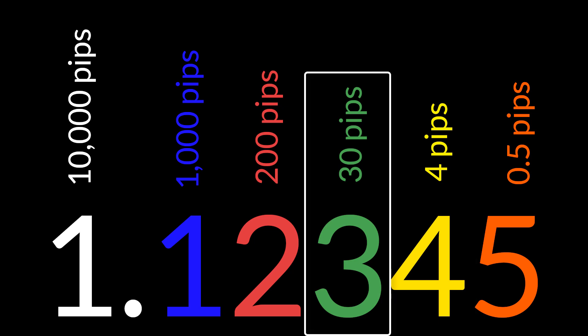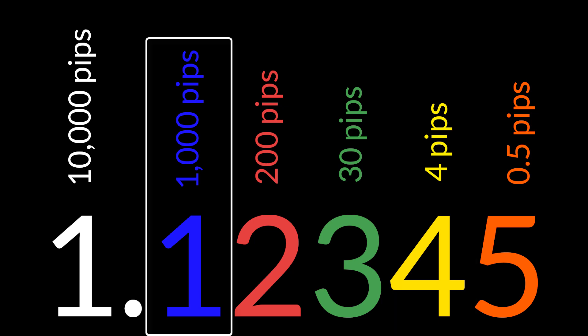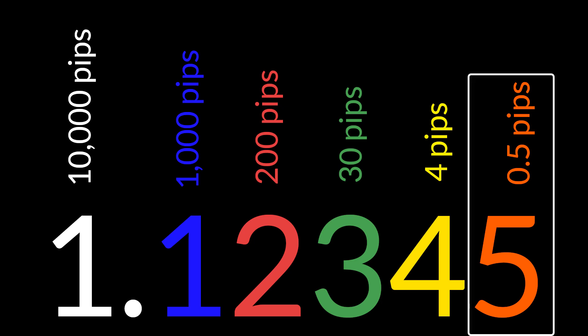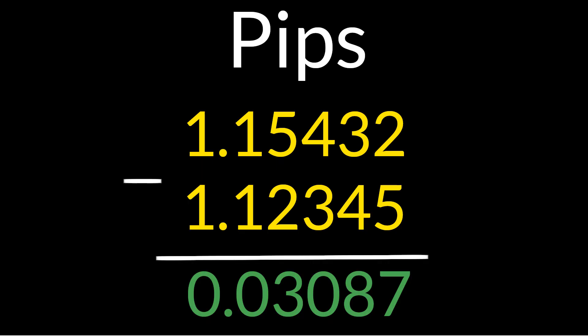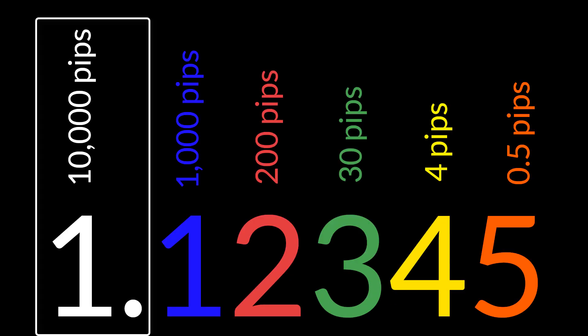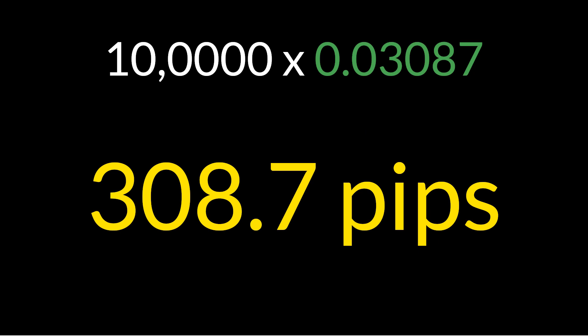For example, here we have 4 pips, 30 pips, 200 pips, 1000 pips. Sometimes you'll see a number after the pip — that's called a pipette, which is a tenth of a pip. If you want to know how many pips between two prices it's really just basic arithmetic: subtract one from the other. The digit to the left of the decimal represents 10,000, so multiply 10,000 times 0.03087 and you get 309 pips.